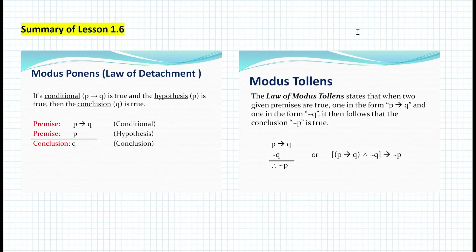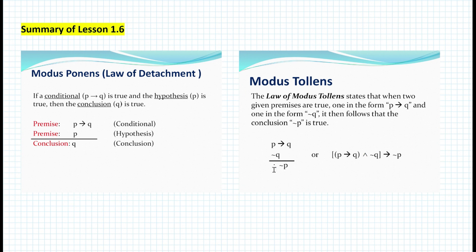Here's a summary of today's lesson. We learned about modus ponens, also called the law of detachment: if a conditional is true and the hypothesis P is true, then the conclusion must be true. And we learned about modus tollens: if the conditional statement is true but the conclusion is negated as the second premise, then the hypothesis is also false. That's basically it for today's lesson. If you have any questions, please post a comment to this YouTube video. I hope you enjoyed this video — if you did, please hit the like button and don't forget to subscribe. Have a wonderful day.